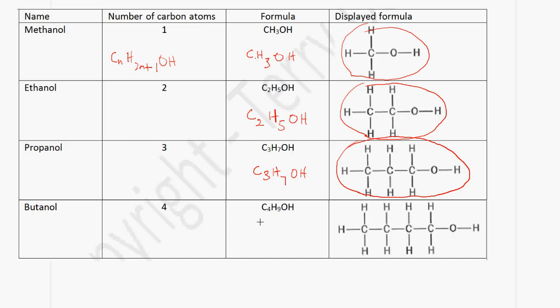In the case of butanol, we have four carbon atoms. So it will be C4H9OH — using 2×4+1=9 — and this represents the displayed formula for butanol.